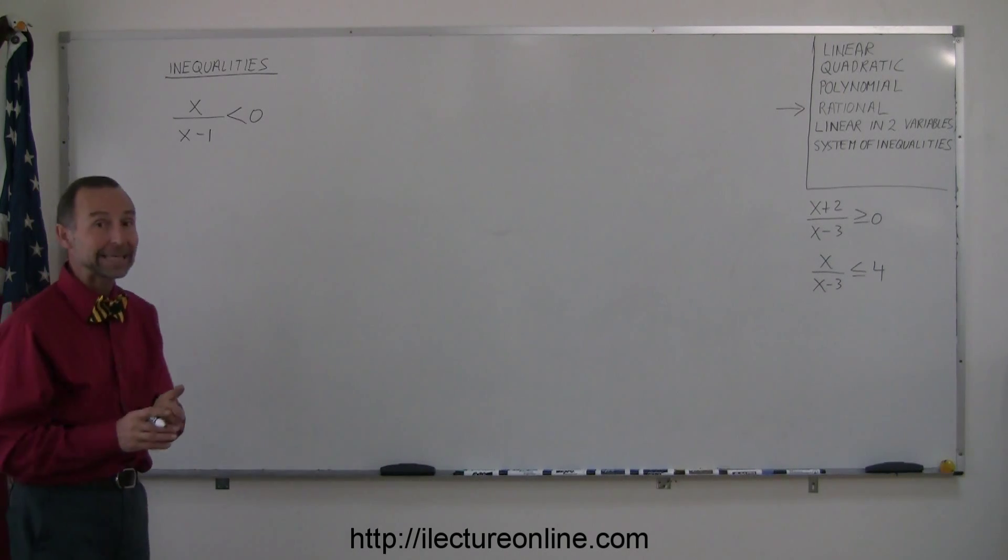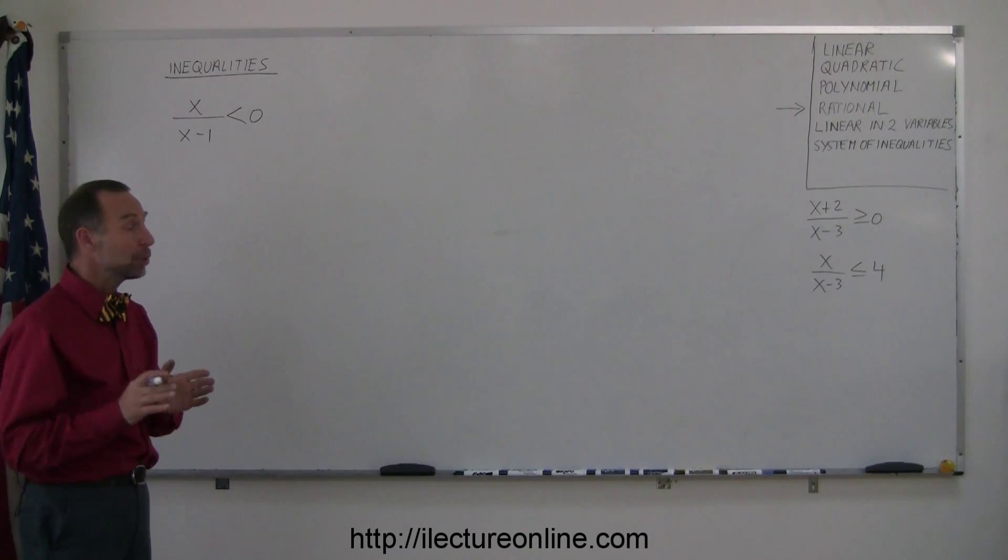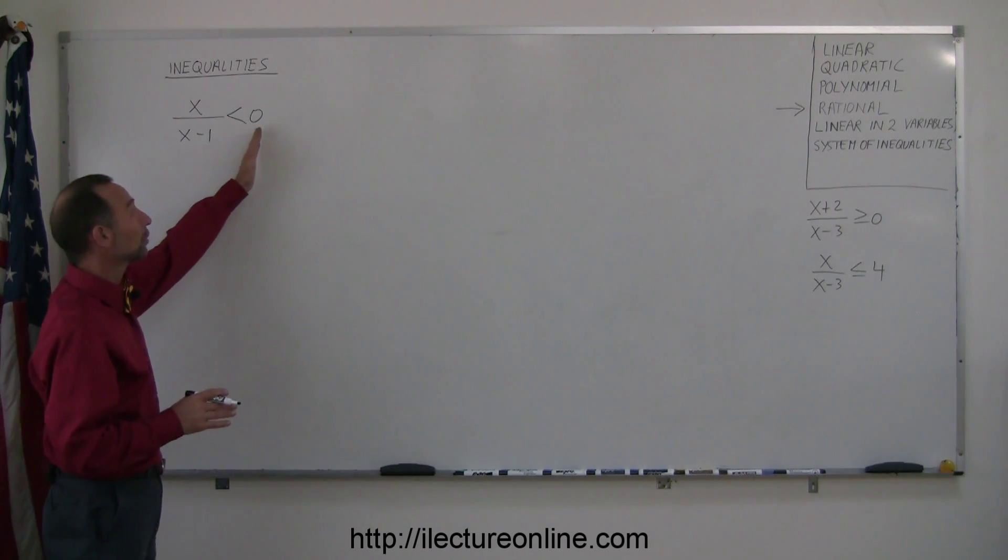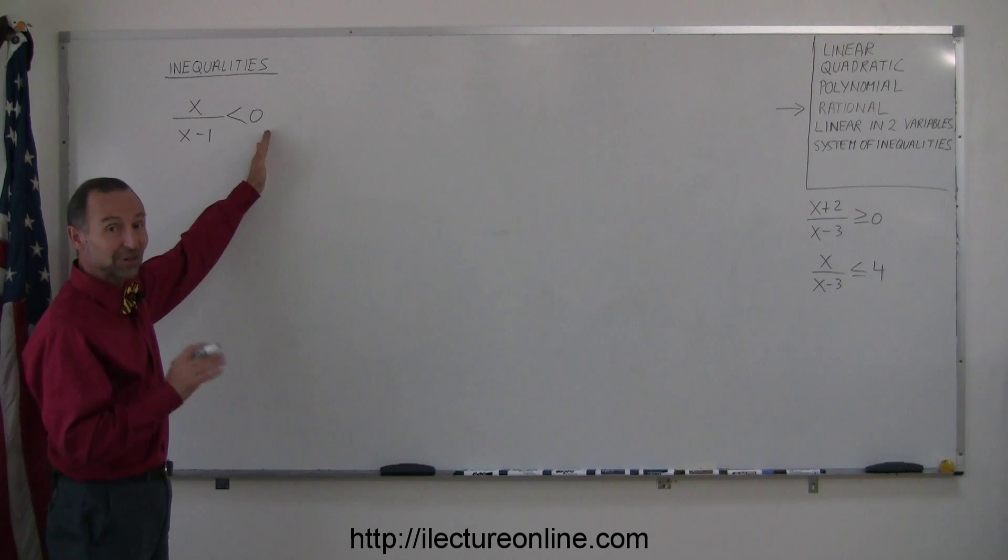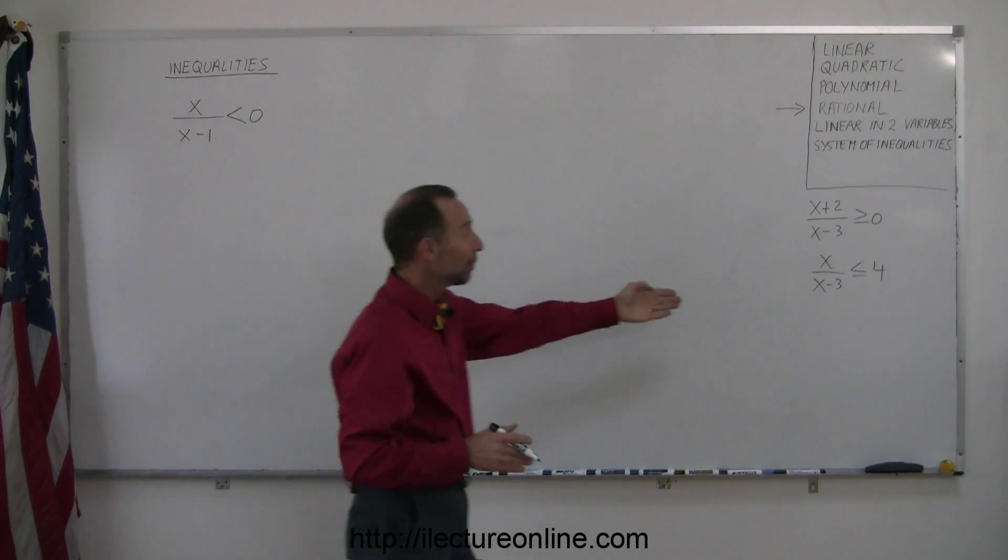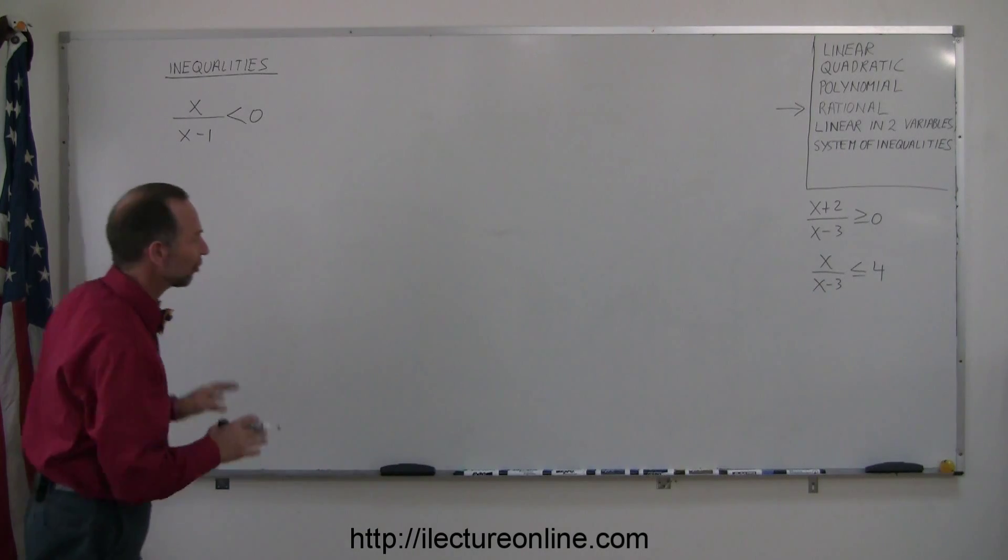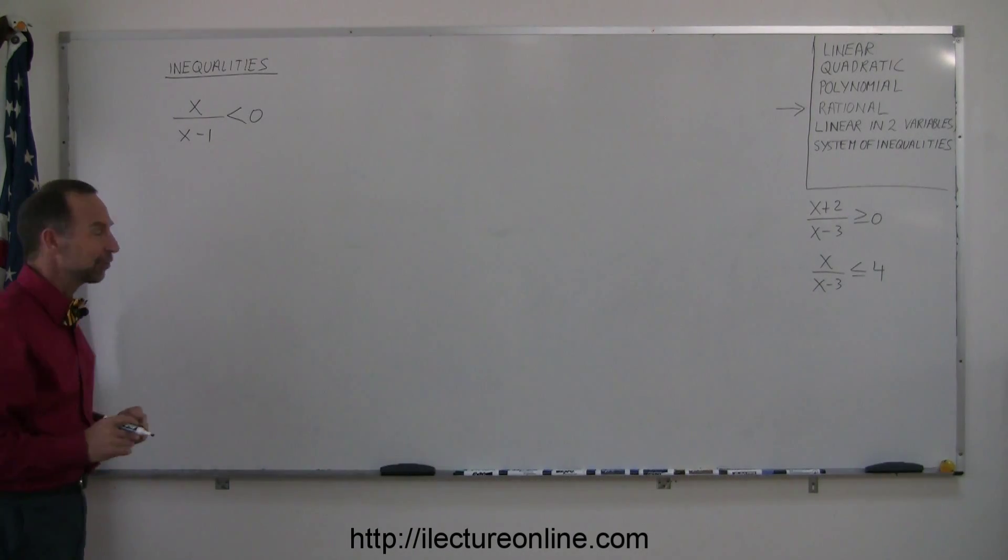In order to do that, you have to find the critical points. But before you even do that, you want to make sure that the number on the right side of the inequality is actually a zero, because if it's not zero, you want to turn that into zero first. Later on, I will show an example where the number to the right is not zero, on how to take care of that. But let's start with this example first.